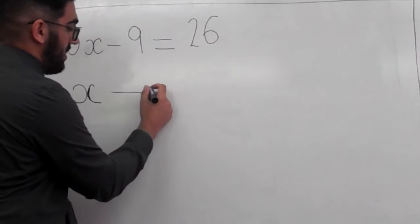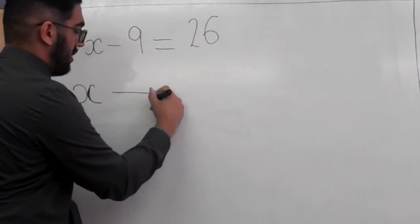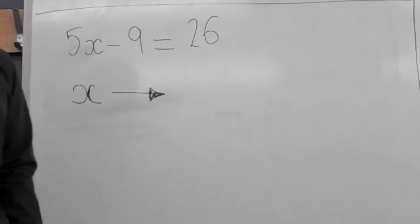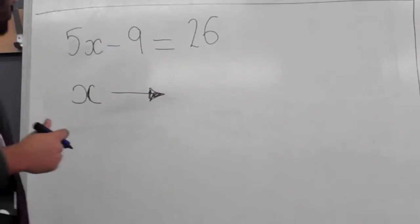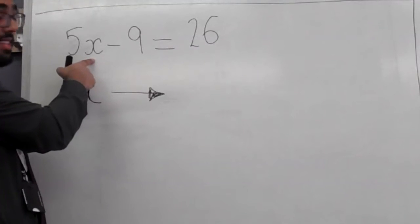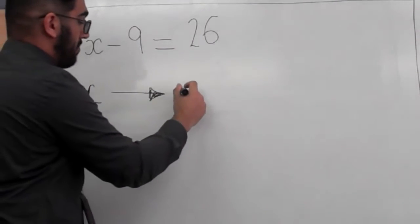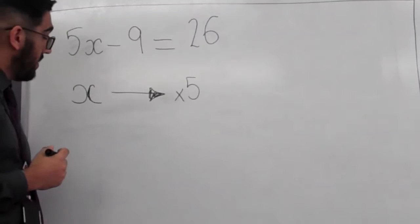or anything else to represent it. What we do, as we draw an arrow across, then we first try to figure out what's happening to the x. So, the first thing happening to the x in this equation is that it's been multiplied by 5.